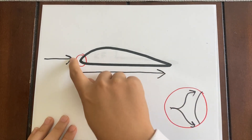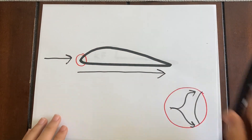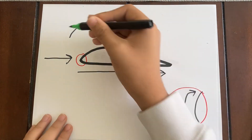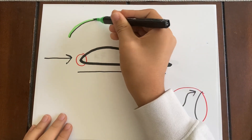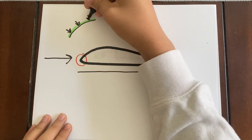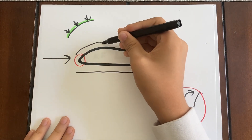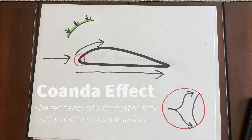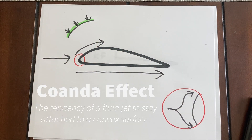On the top of the airfoil, we have a curvature. On the surface of an airfoil, there's a boundary layer of air that is sticky, so it sucks in the surrounding air. This makes the oncoming airflow follow the path of the curve, and this is called the Coanda effect — the tendency of a fluid jet to stay attached to a convex surface.